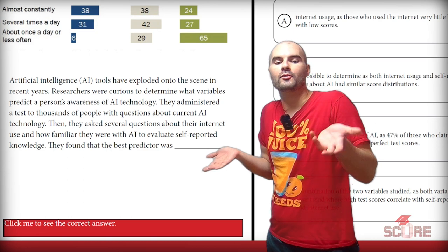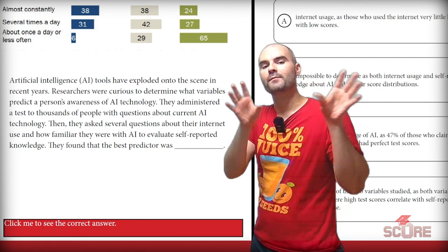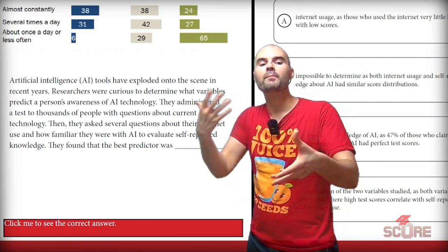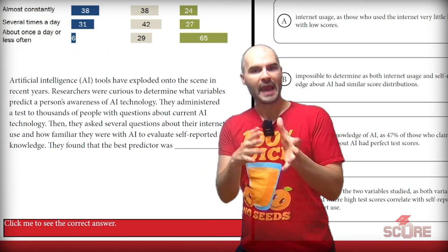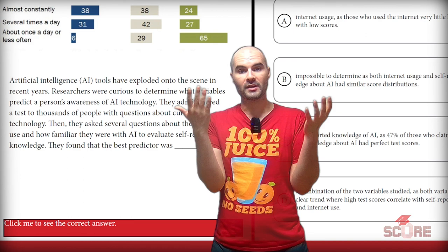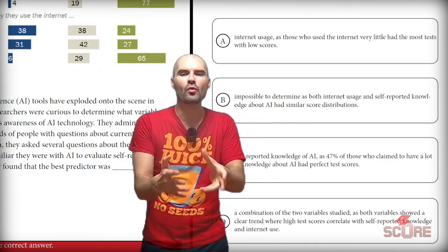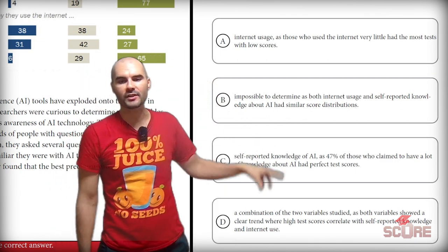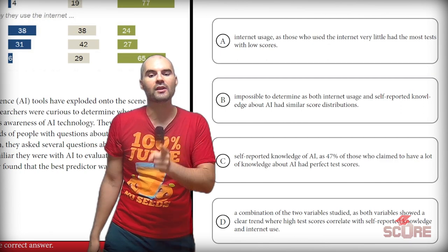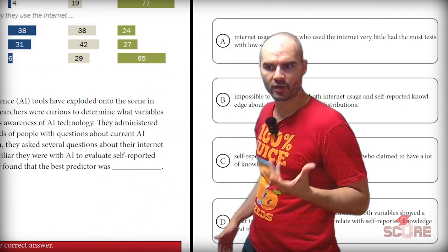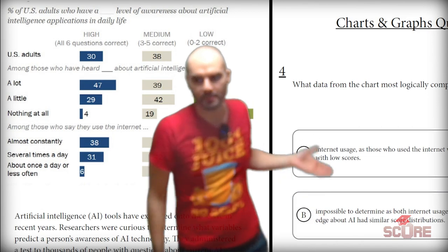Researchers were curious to determine what variables predict a person's awareness of AI technology. They administered a test and asked several questions about internet use and how familiar they were with AI to evaluate self-reported knowledge. They found the best predictor was... so we're looking for the best predictor of familiarity with AI. A says internet usage, since those who use the internet very little had the most low scores — I generally don't want to choose that negative framing. B says it's impossible to determine — that's usually wrong. C says self-reported knowledge of AI, as 40% of those who claim a lot of knowledge had perfect test scores. That is the largest group with good scores, so C is my best answer.